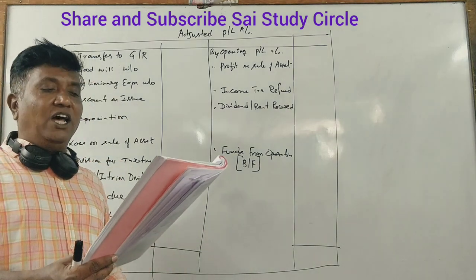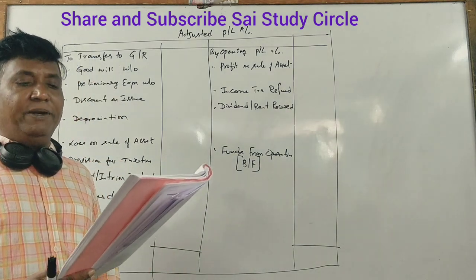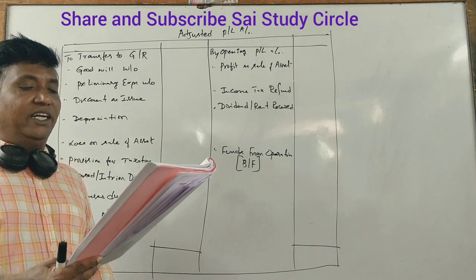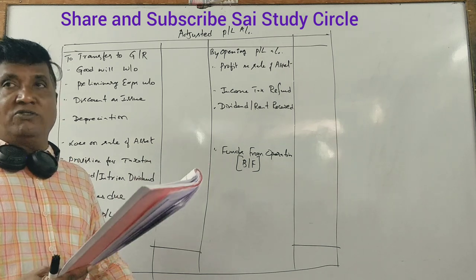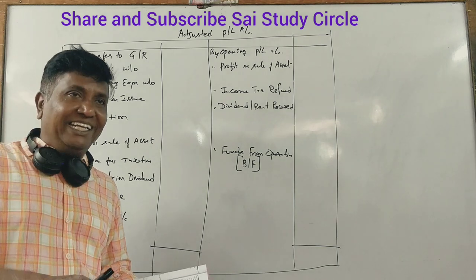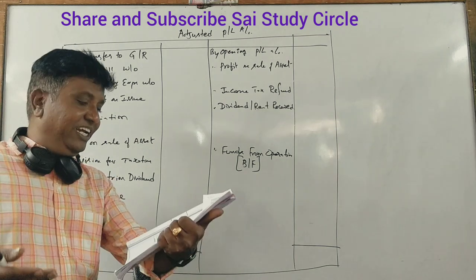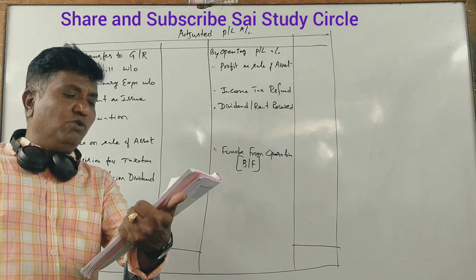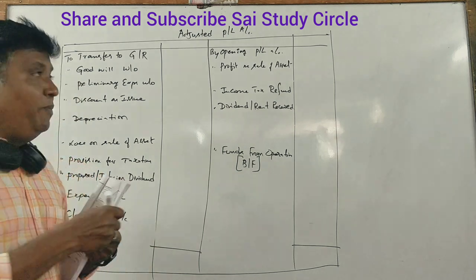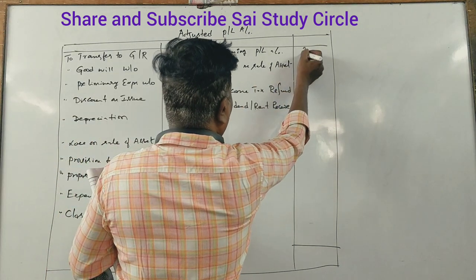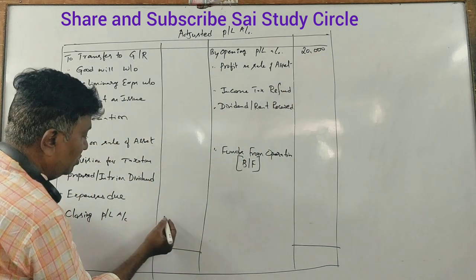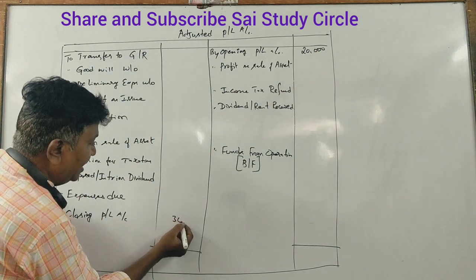The profit and loss account of a company for the year ending 31st March 2008 and 31st March 2009 is given. In 2008 and 2009, the opening balance is $30,000.